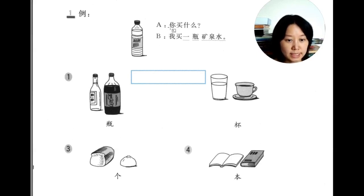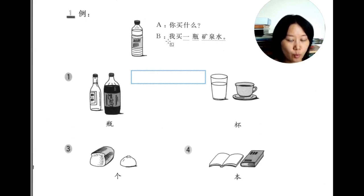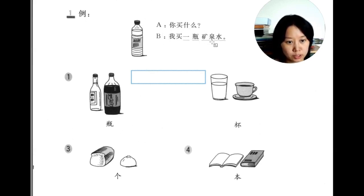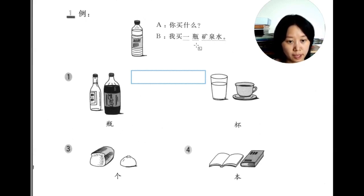The example is 你买什么? — What do you buy? And B answers: 我买一瓶矿泉水. 瓶 means bottle, and 矿泉水 is mineral water. 矿泉水 is the noun, and 一瓶 is the number plus measure word.